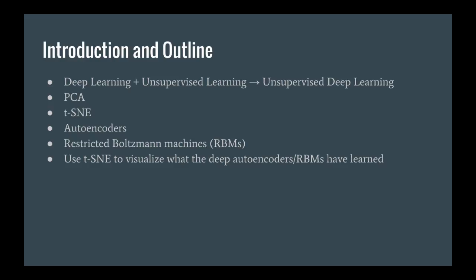Next we'll look at a special type of unsupervised neural network called the autoencoder. After describing how an autoencoder works, I'll show you how you can link a bunch of them together to form a deep stack of autoencoders that leads to better performance of a supervised deep neural network.